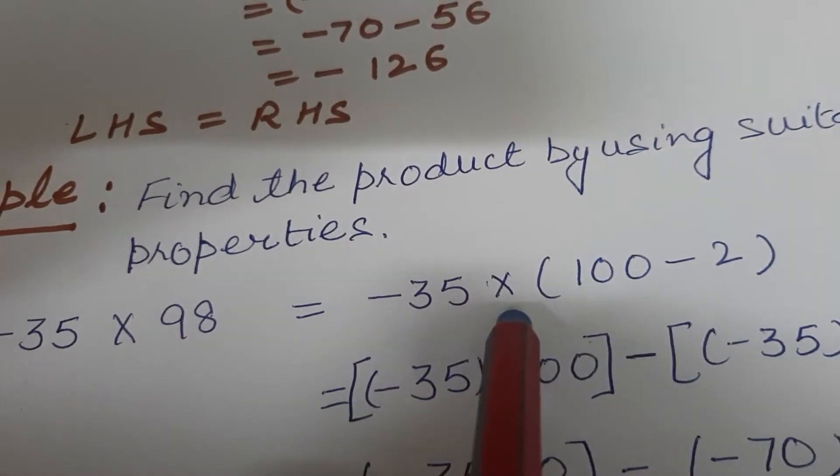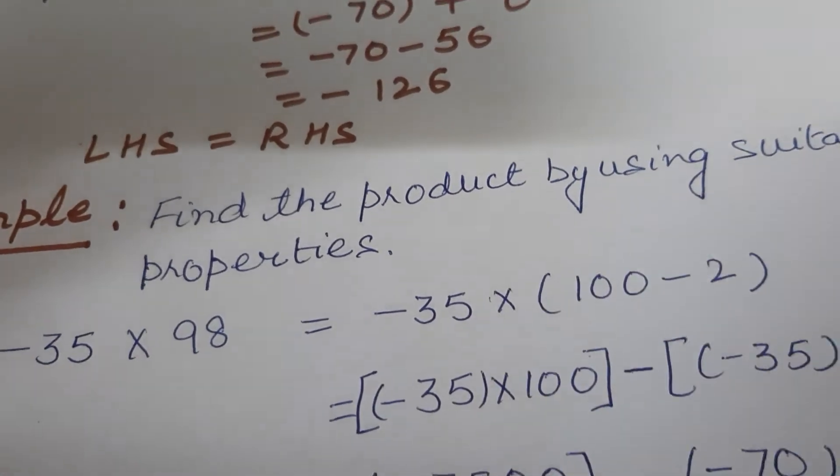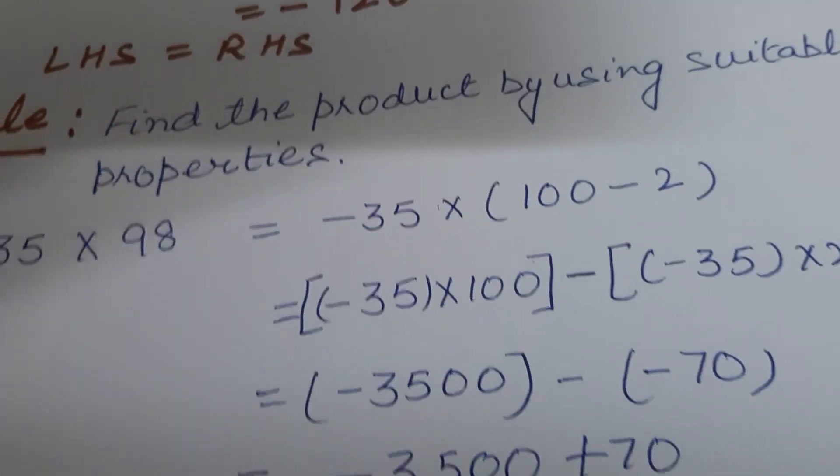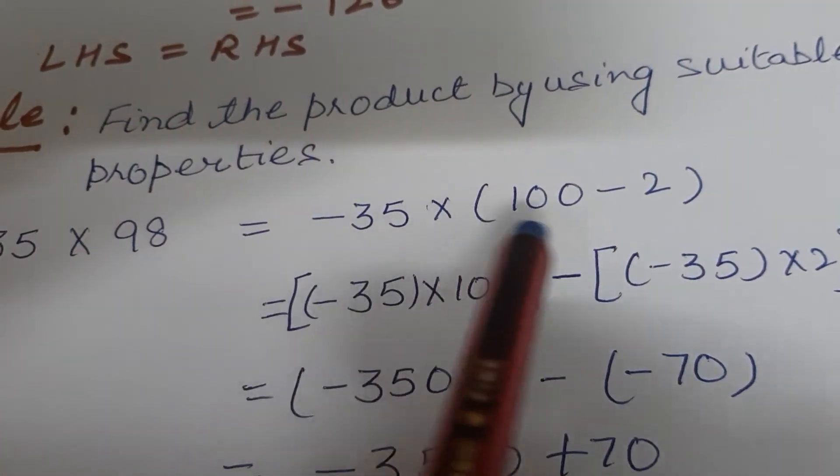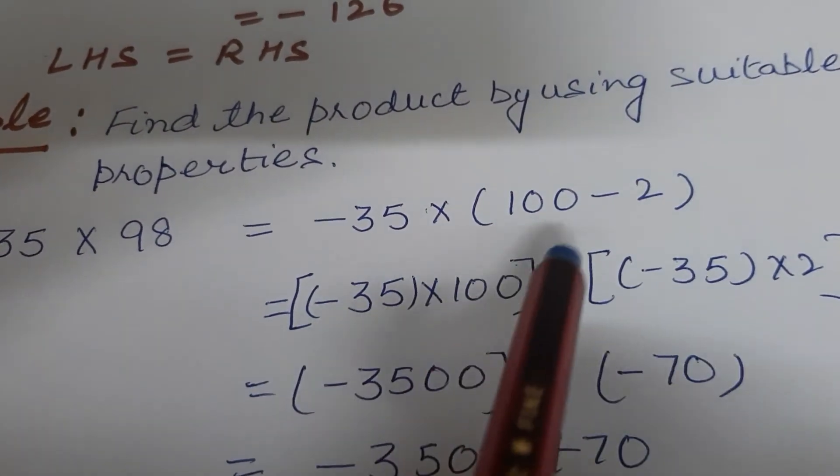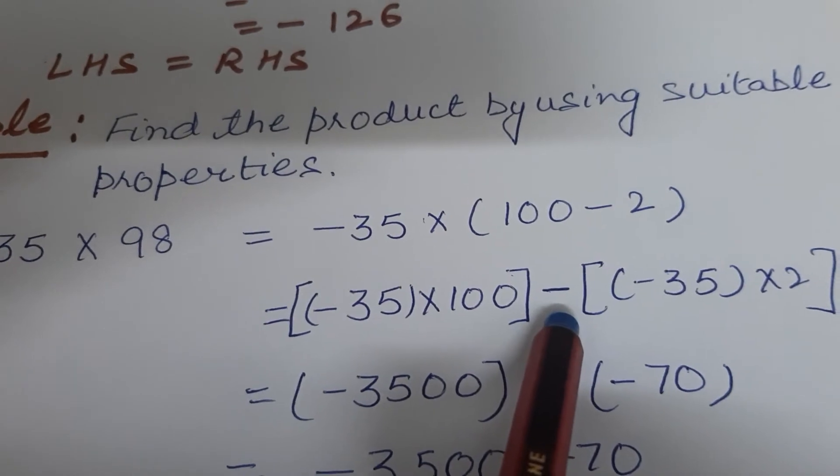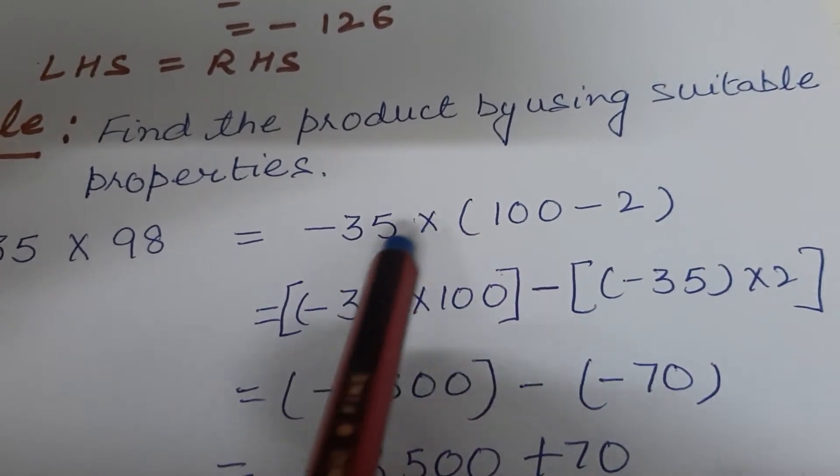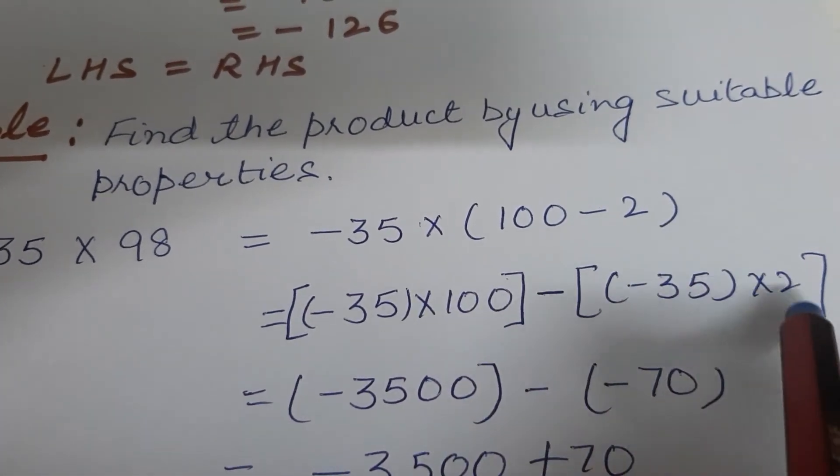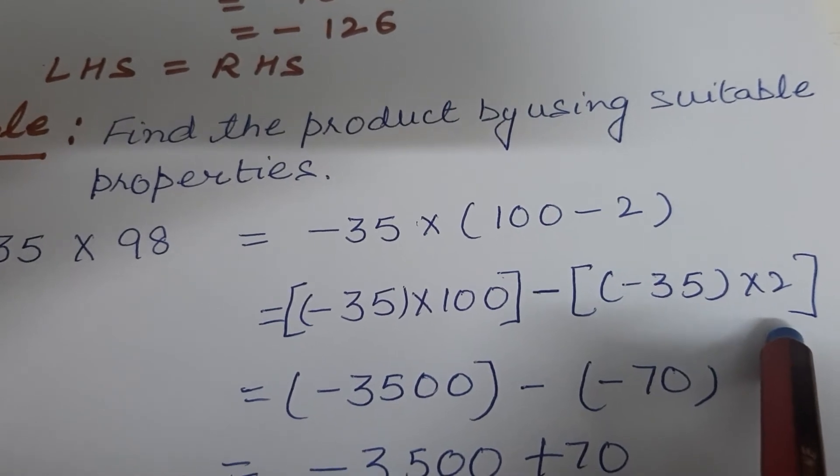So this minus 35 will be multiplied with both these numbers. Minus 35 into 100, minus—now here is a negative sign, so we will put a negative sign—again minus 35 will be multiplied with 2.